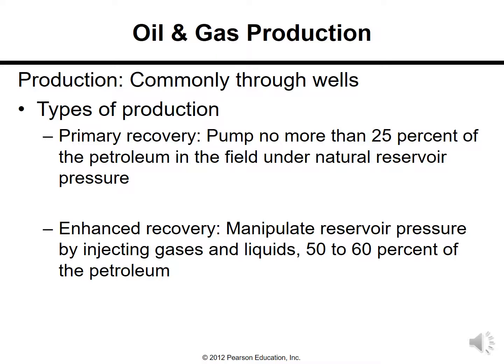Oil and gas are commonly produced through wells. Primary recovery pumps no more than 25% of the petroleum in the field under natural reservoir pressure. Enhanced recovery manipulates reservoir pressure by injecting gases and liquids, recovering 50 to 60% of the petroleum.